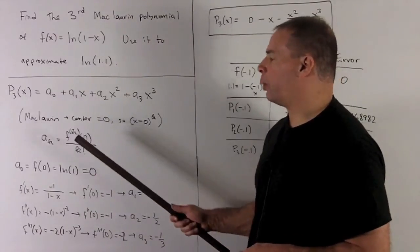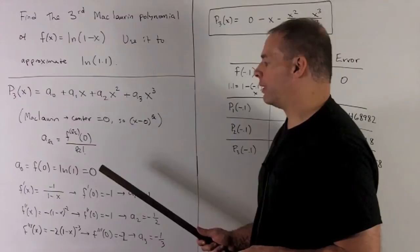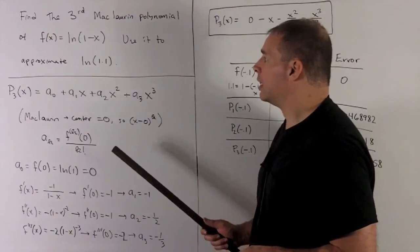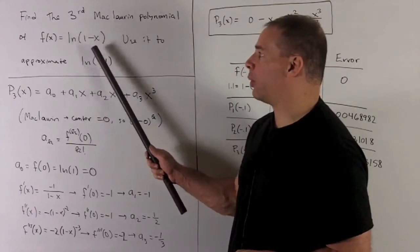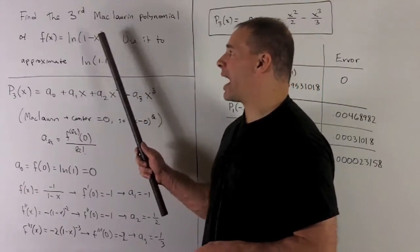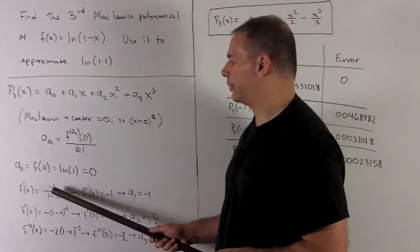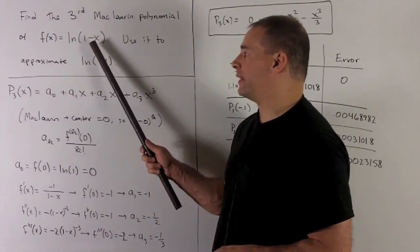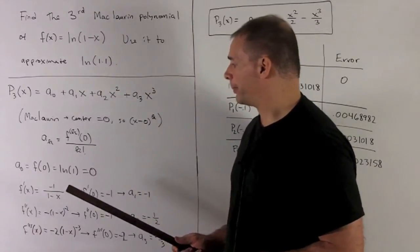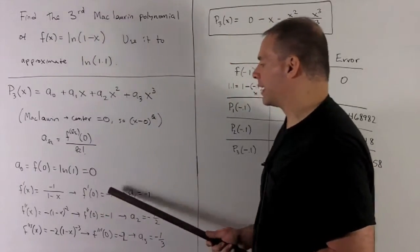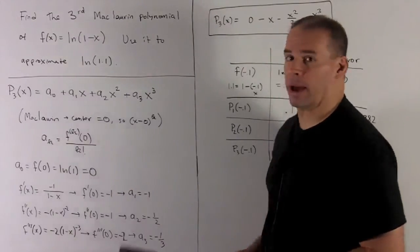To get a_1, we take the first derivative evaluated at 0, divided by 1 factorial, which is 1. So we take the derivative of natural log of 1 minus x. Pretend there's a box around the 1 minus x. Natural log of box is just take whatever the box is, put it under a 1. Then I have to take the derivative of the inside. That's going to give me a minus 1 up on top. I put a 0 in there, and that gives me a minus 1. So our a_1 is minus 1.